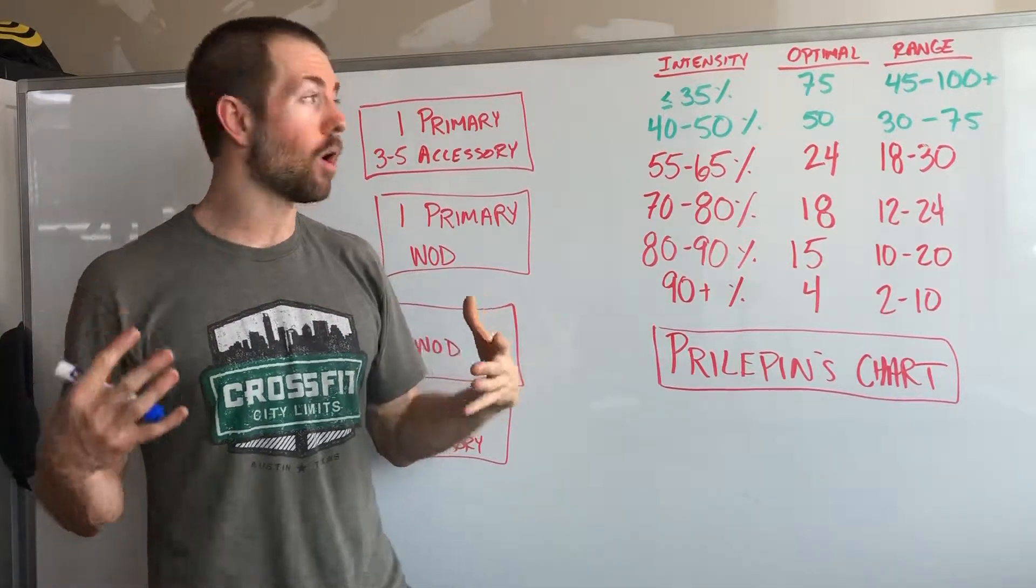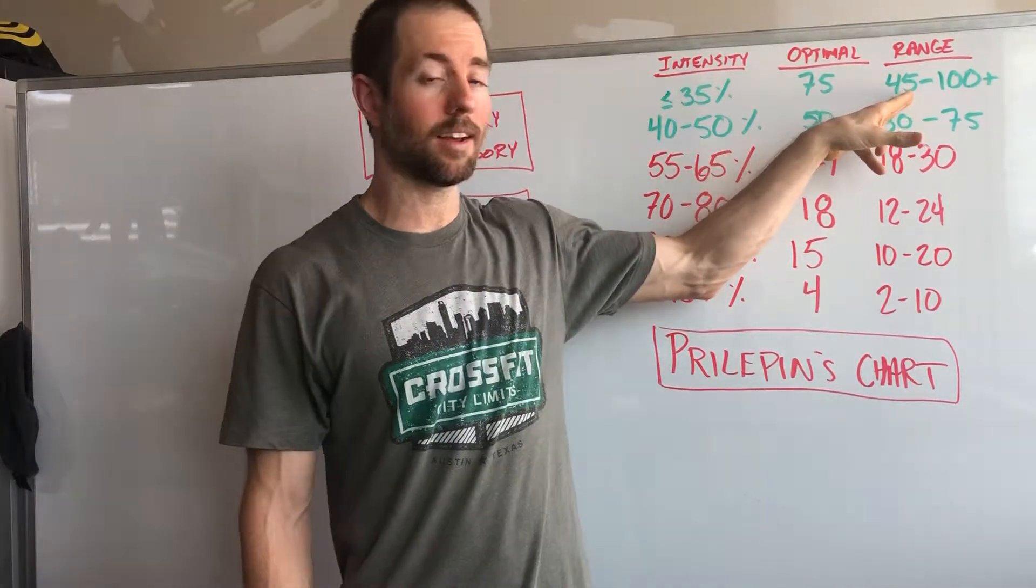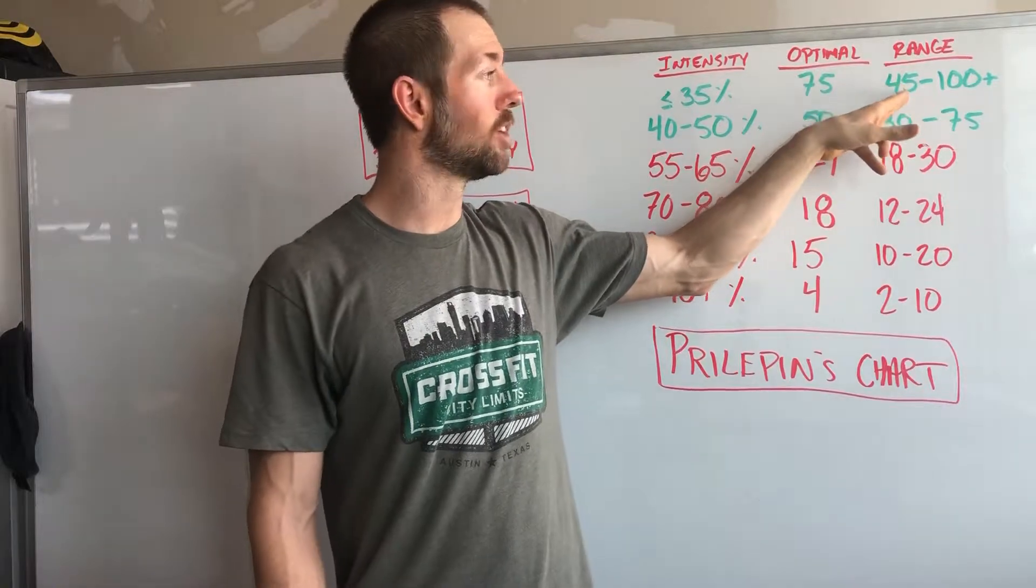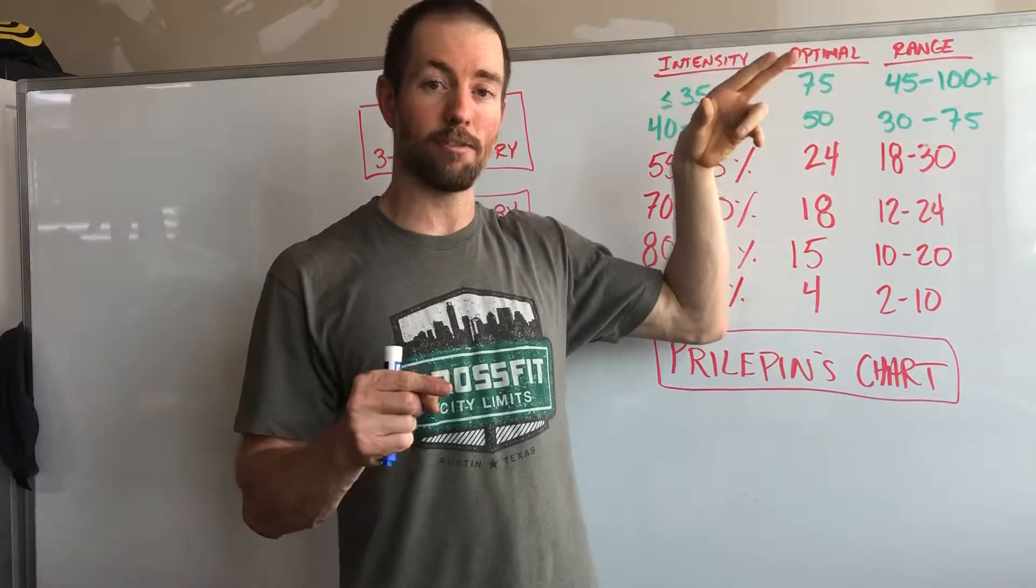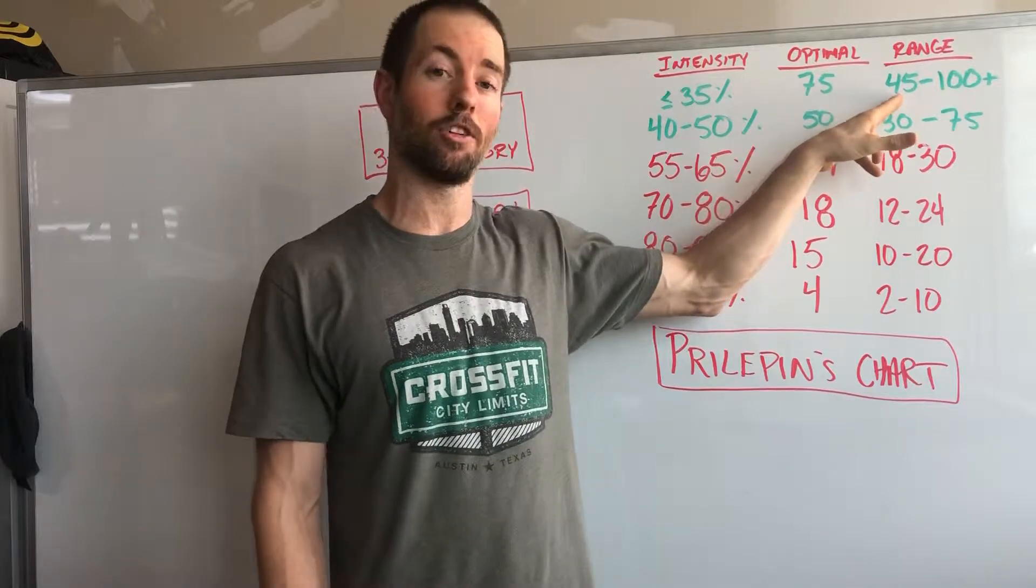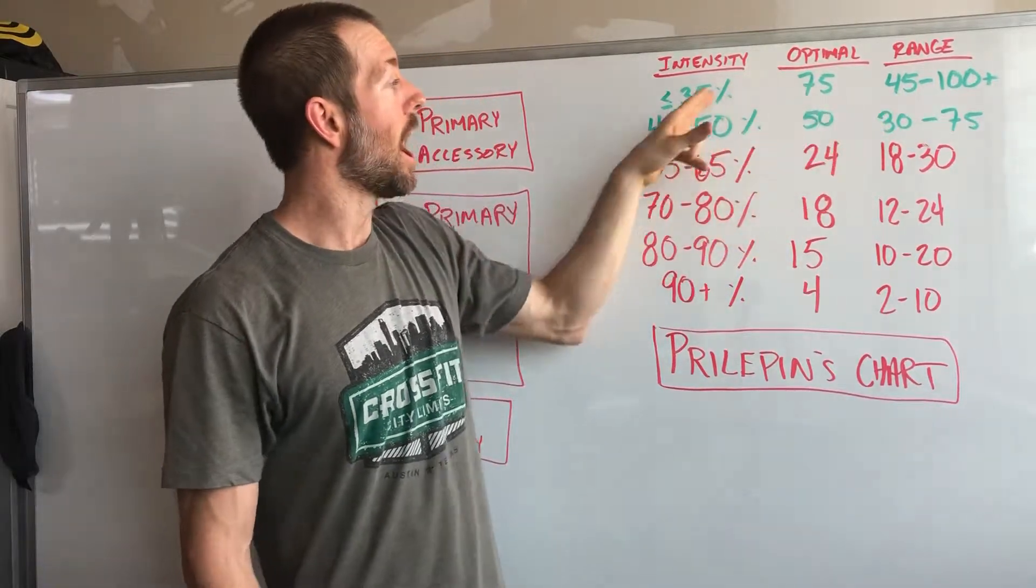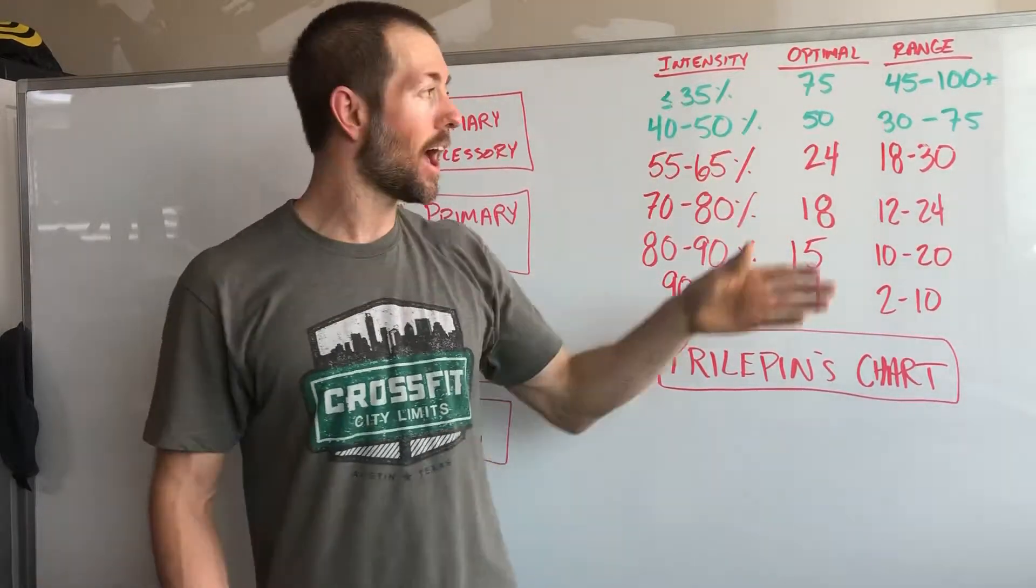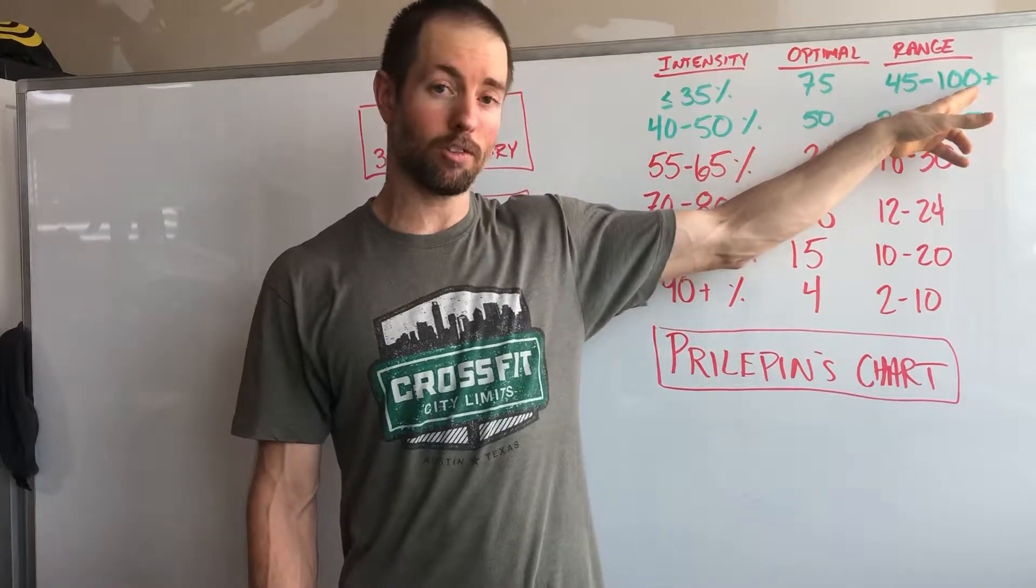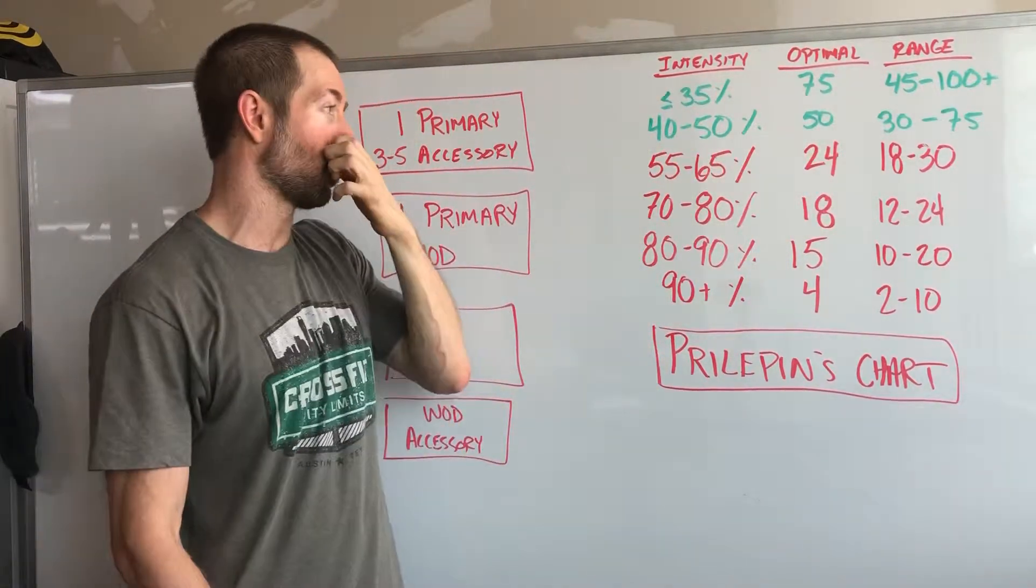This is the go hard. Notice Fran is 45 reps, so to get maximal intensity we're going to need to get that volume down to a point that really lets you push the pace. If we want to slow you down then we can get up into the 100 plus rep range when we're using super lightweight.